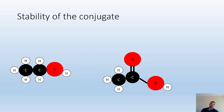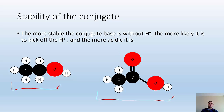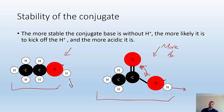Stability of the conjugate base: looking at CH3CH2OH — ethanol — and CH3COOH — acetic acid. The more stable the conjugate base is without the H+, the more likely it is to kick off the H+, and the more acidic it is. With ethanol, you kick off an H+ and you'll have a minus on that oxygen. Whereas with acetic acid, if you kick off an H+, you'd have a minus on that oxygen, but you'd also create resonance. Resonance structures make things more stable, so because acetic acid is more stable without hydrogen, it's definitely more acidic. The reason it's more stable is because of that resonance structure.